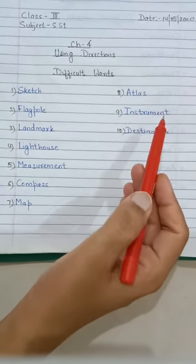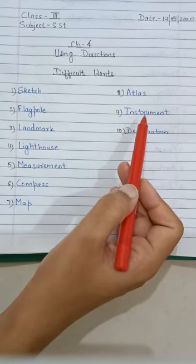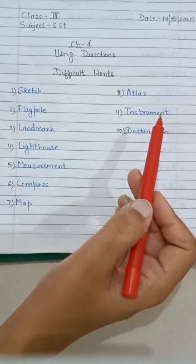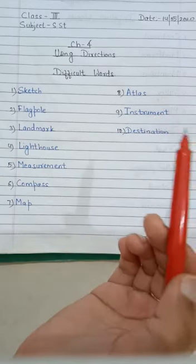The ninth word is instrument. I-N-S-T-R-U-M-E-N-T, instrument. An instrument is a tool, especially the ones for accurate or precision work.